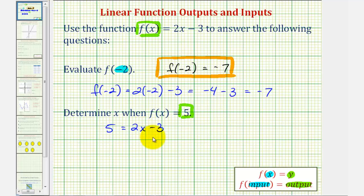So we'll start by adding three to both sides of the equation. So we'd have eight equals two x. Divide both sides by two and we have x equals four. So x equals four when f of x equals five.